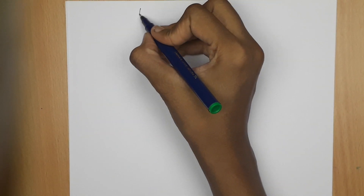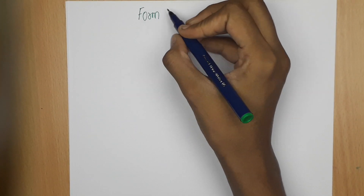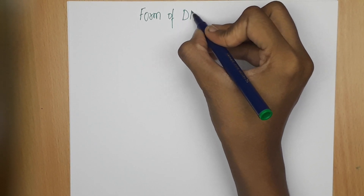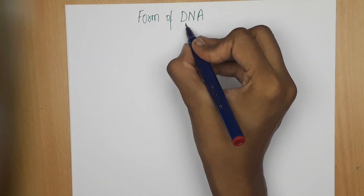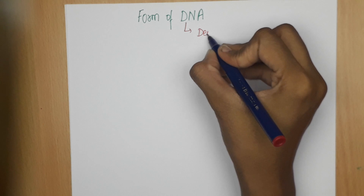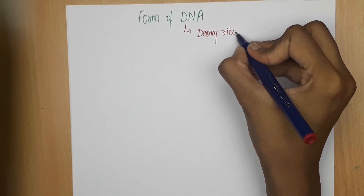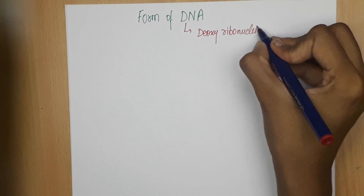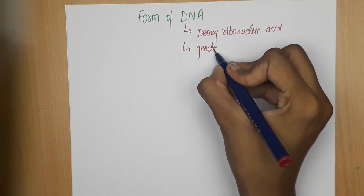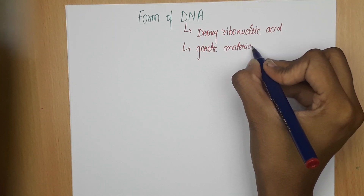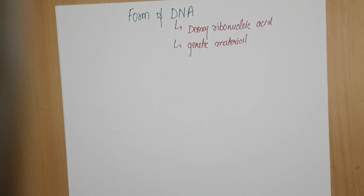Hello everyone, this is Priyanka and today I am going to tell you about the forms of DNA — what are the different types of DNA. DNA, as you all know, is deoxyribonucleic acid and it is the genetic material of all living organisms except a few viruses. So DNA exists in different forms.